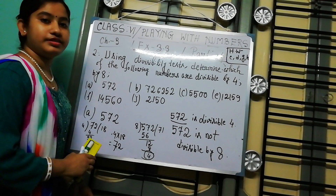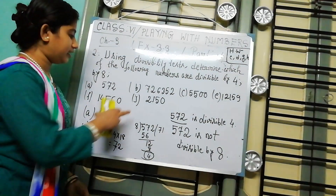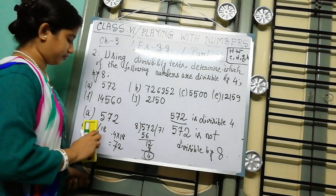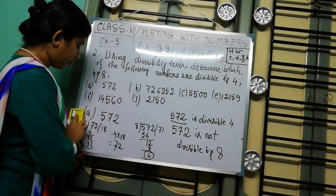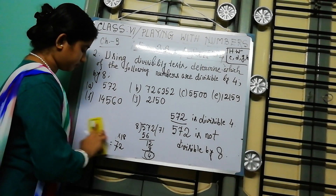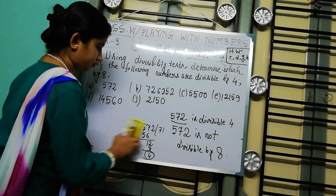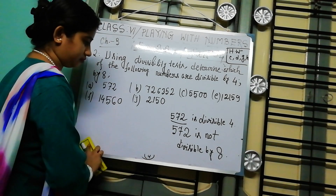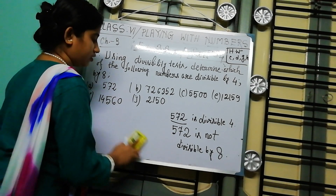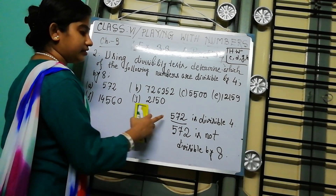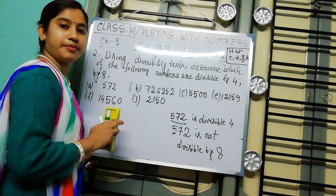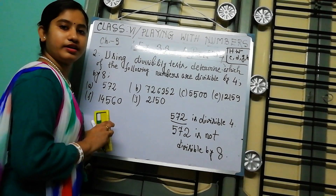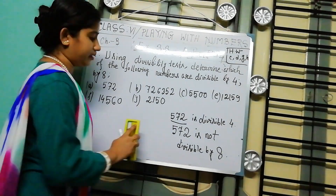So number A, 572, is divisible by 4 but not divisible by 8.